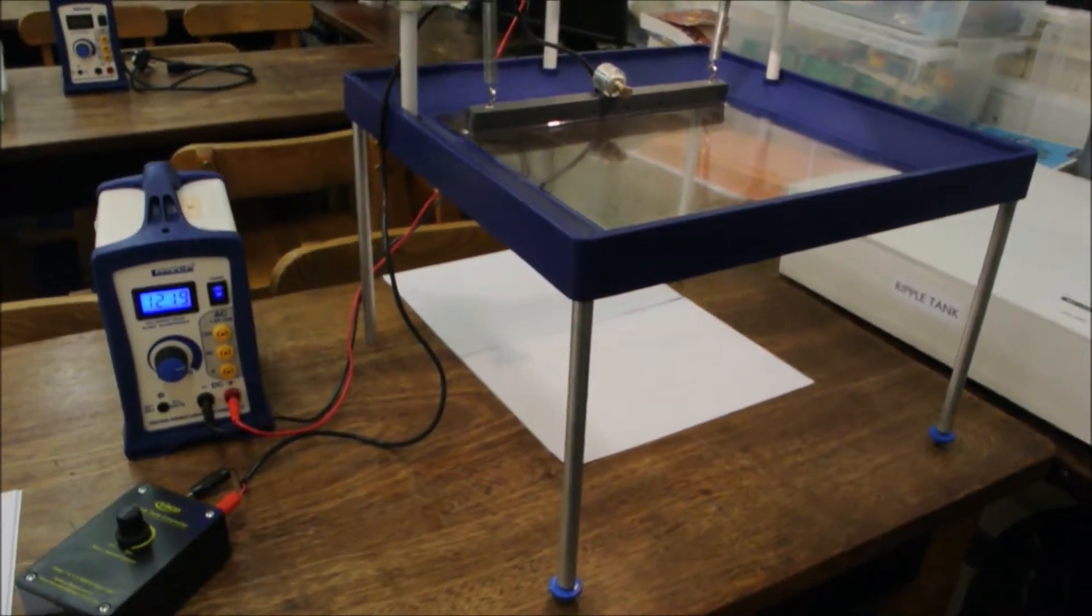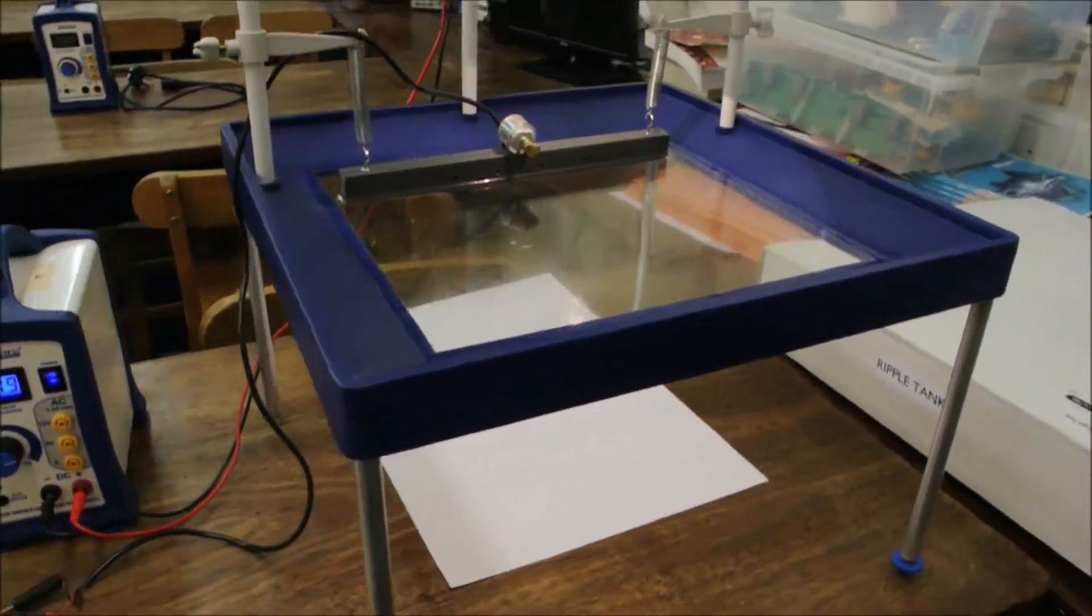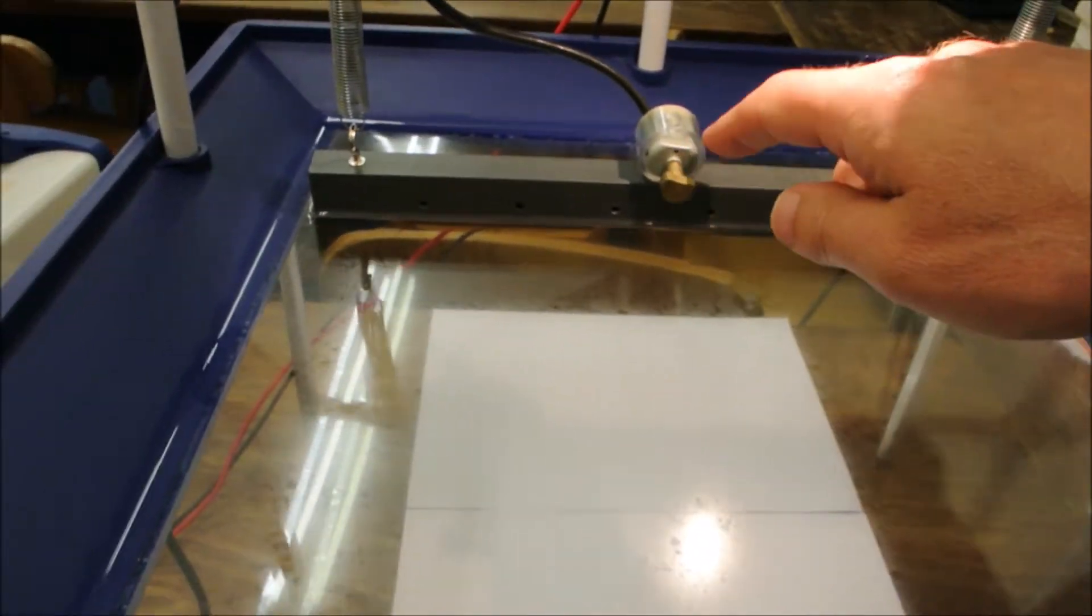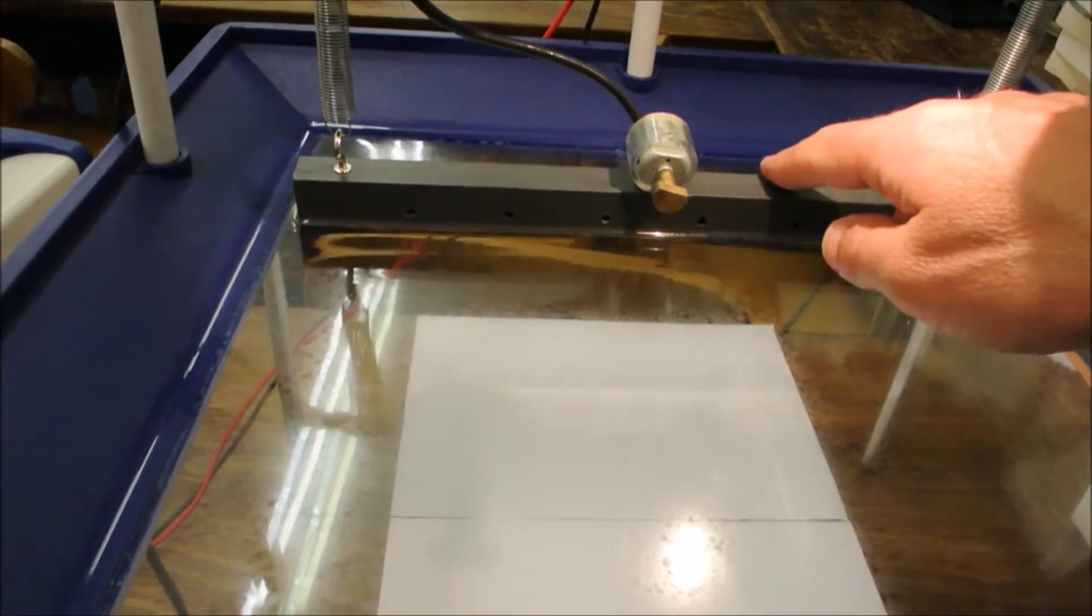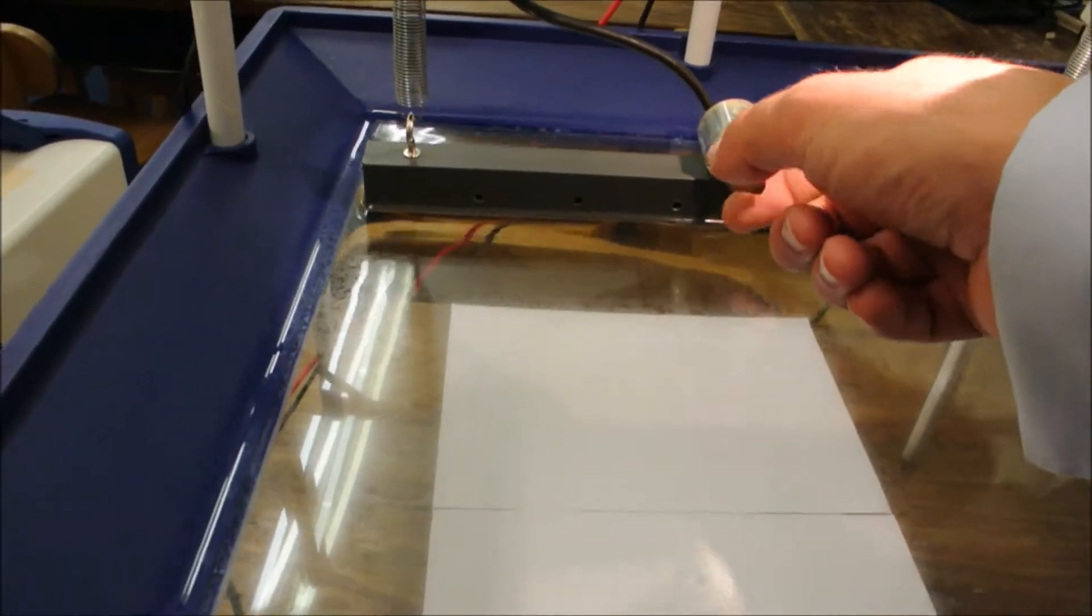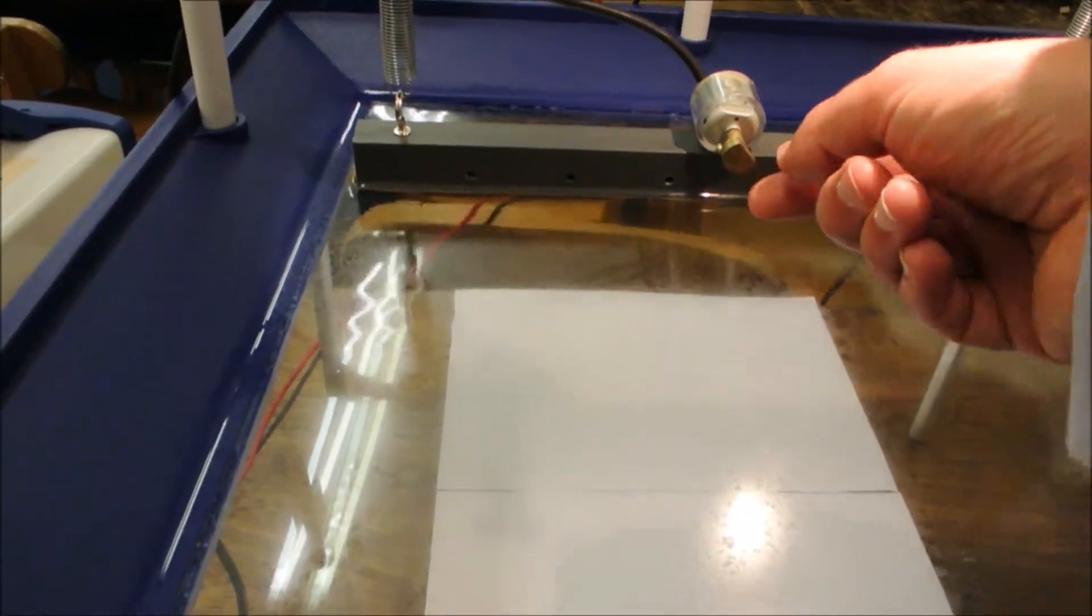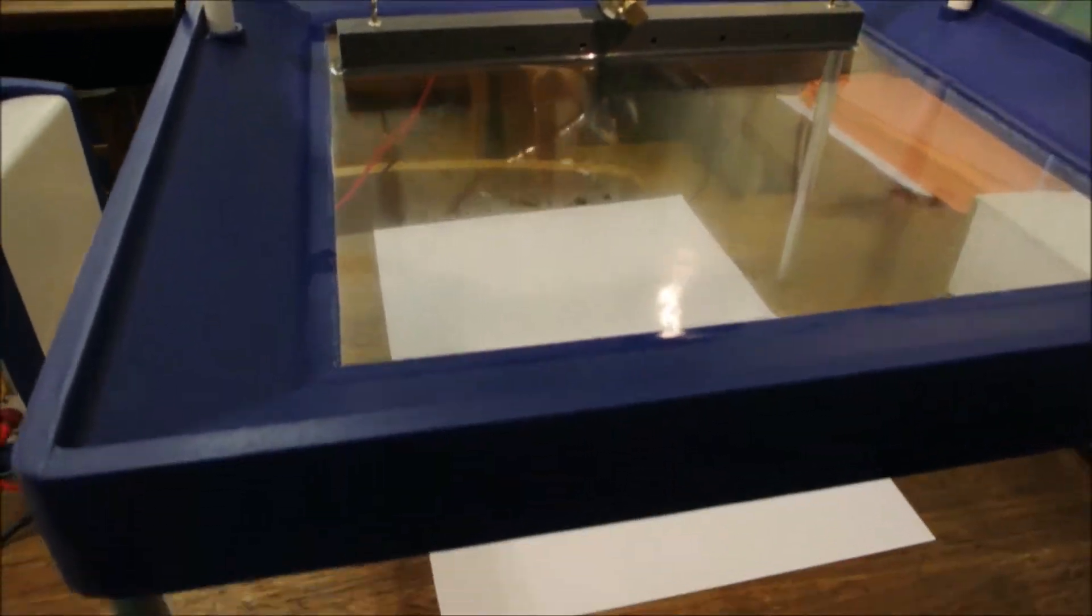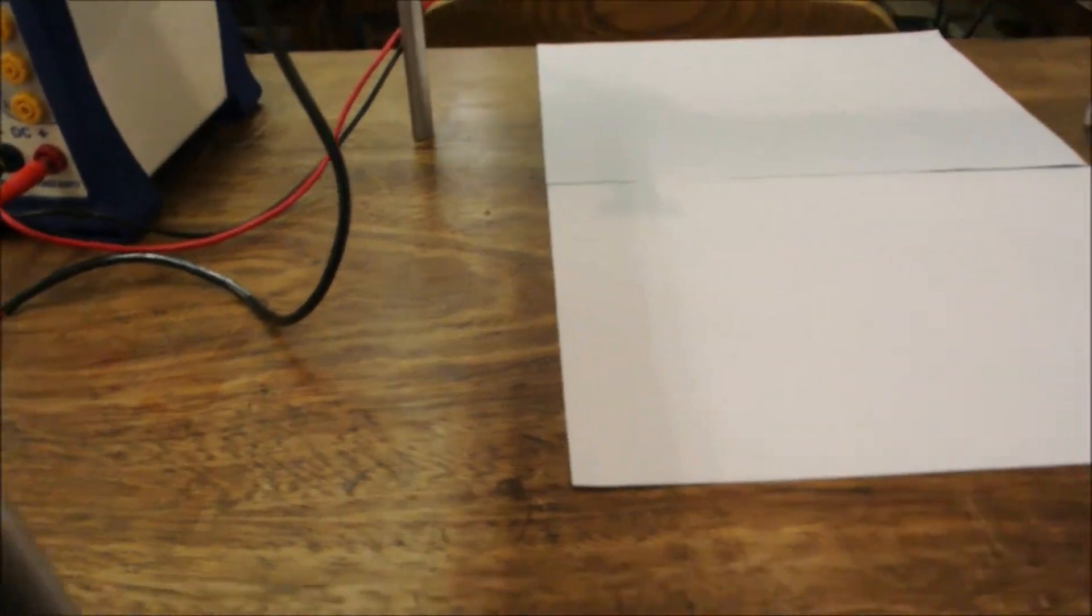So here we've got the ripple tank, and you can see that here we've got a shallow tank of water, and there's a beam that's suspended on springs, and then there's a little motor with an eccentric weight on the end of it here, and that's going to rotate round, and we're going to project an image of the waves down onto this piece of paper down at the bottom.